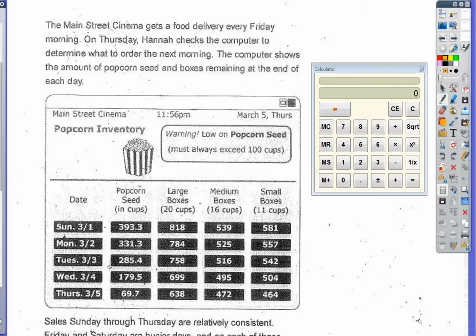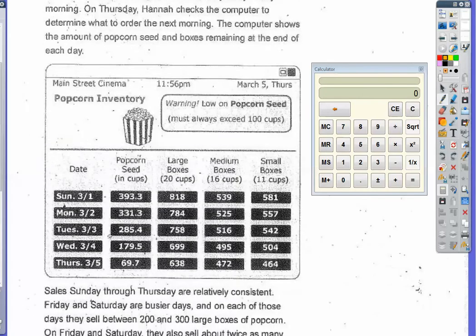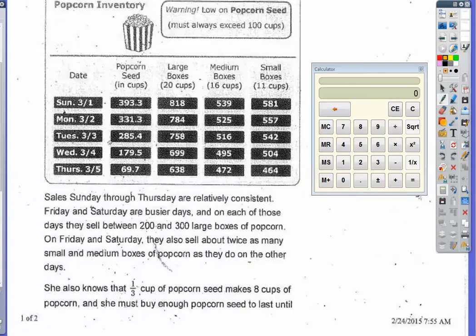There's a chart provided. Before diving into it, I'll look at what the question is asking. Sales Sunday through Thursday are relatively consistent — they don't change a whole lot. Friday and Saturday are busier days, and on each of those days they sell between 200 and 300 large boxes of popcorn. They also sell about twice as many small and medium boxes as on other days.